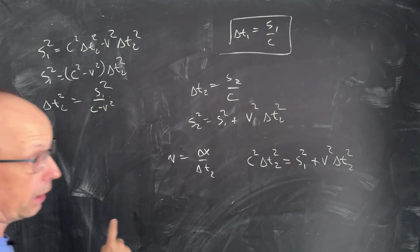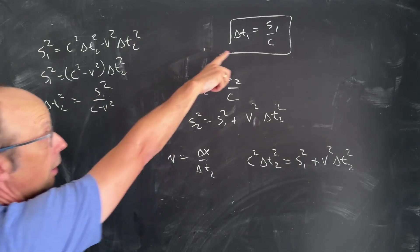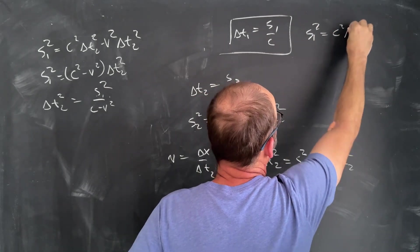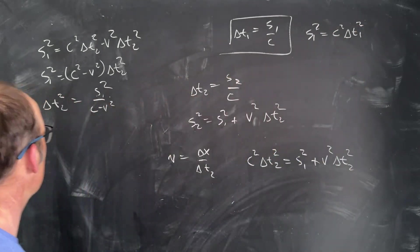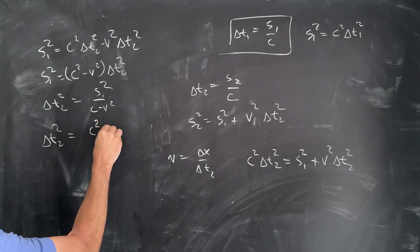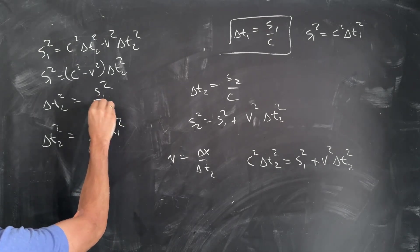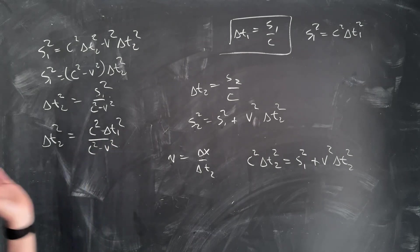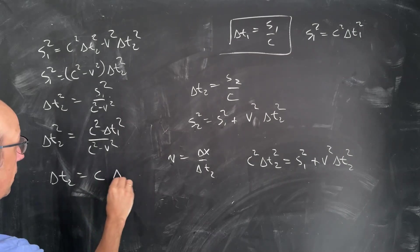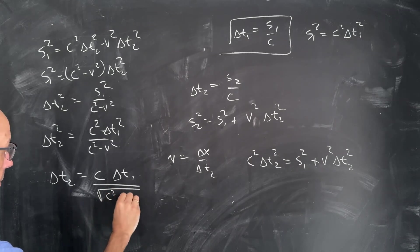Now I can take the square root. But before I do that, I want to get S1 in terms of delta T1 up here. So I can say S1 squared is C squared delta T1 squared. So let's do that. So delta T2 squared is going to be C squared times delta T1 squared over C squared minus V squared. I'm going to take the square root of both sides. So I get delta T2 is C delta T1 over the square root of C squared minus V squared.